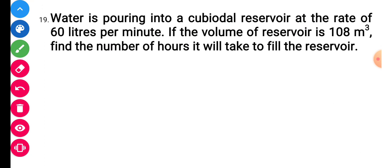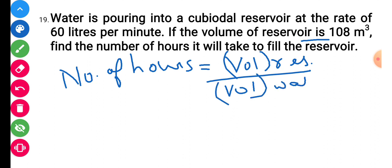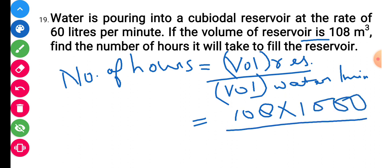Question number 19: water is pouring into a cuboidal reservoir at the rate of 60 liters per minute. The volume of the reservoir is 108 meter cube. Find the number of hours to fill it. Number of hours equals volume of reservoir upon volume of water flowing in 1 minute. Converting 108 m³ to liters by multiplying by 1000, then dividing by 60, and dividing by 60 again to convert minutes to hours.